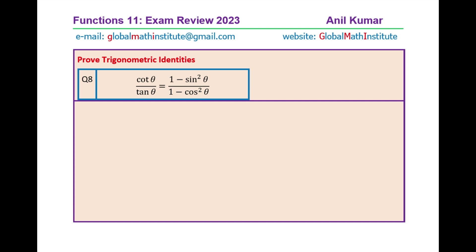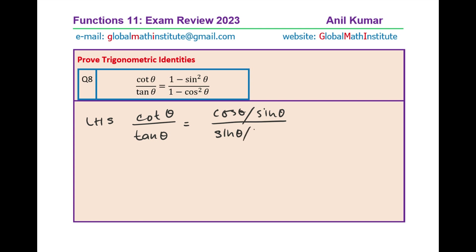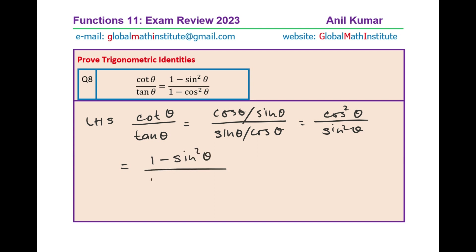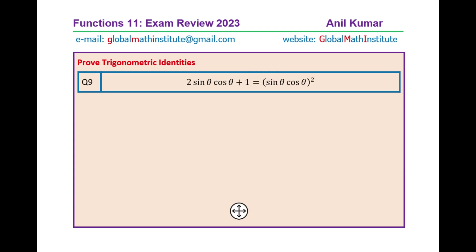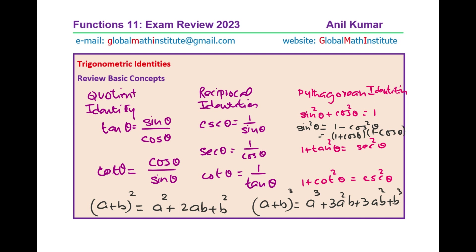Next: cot theta over tan theta equals (1 minus sin squared theta) over (1 minus cos squared theta). Let us start with the left hand side — cotangent theta over tangent theta. Cot is cos over sin, and tan is sin over cos theta. That gives you cos squared theta over sin squared theta. But cos squared theta can be written as 1 minus sin squared theta, and sin squared theta can be written as 1 minus cos squared theta, which is the right hand side. Very easily shown using the same identities we discussed at the beginning.